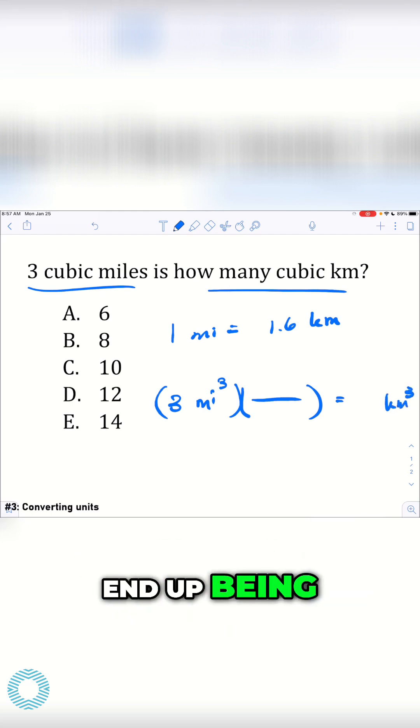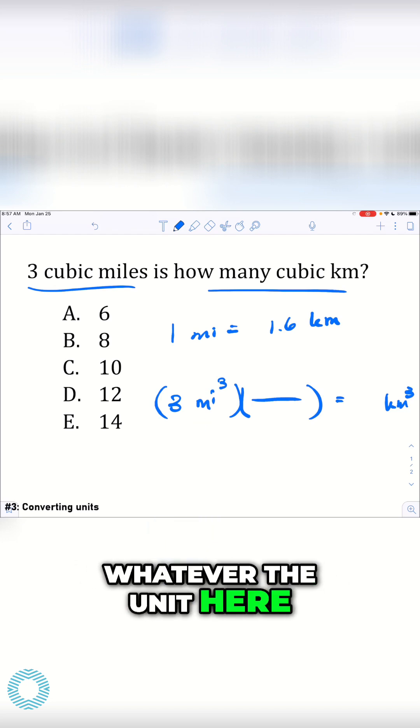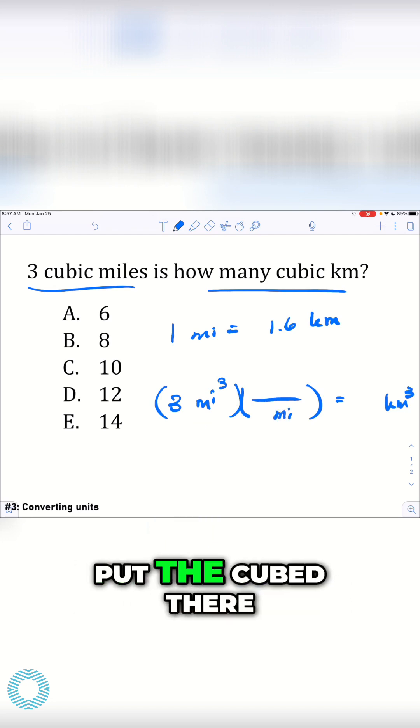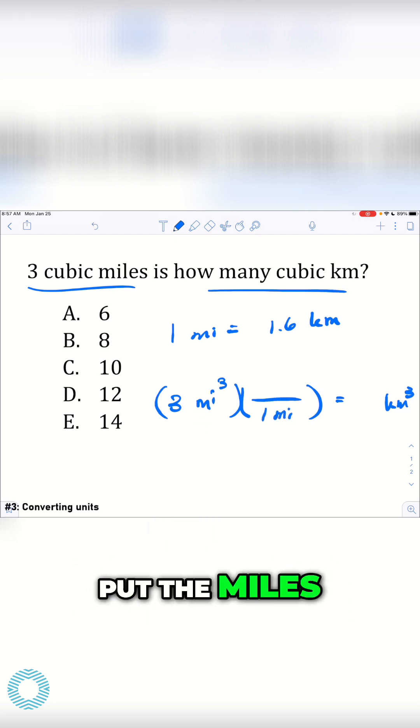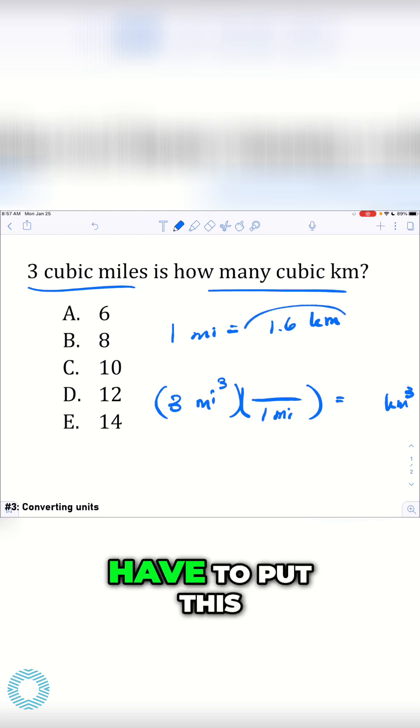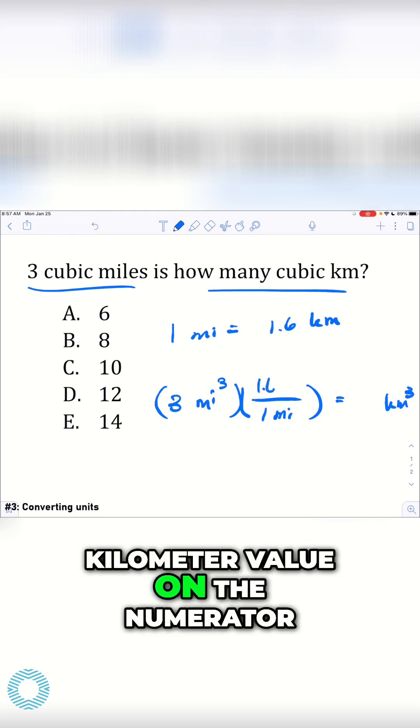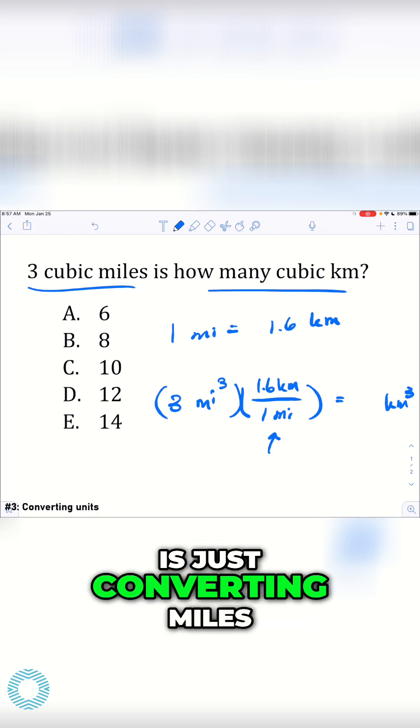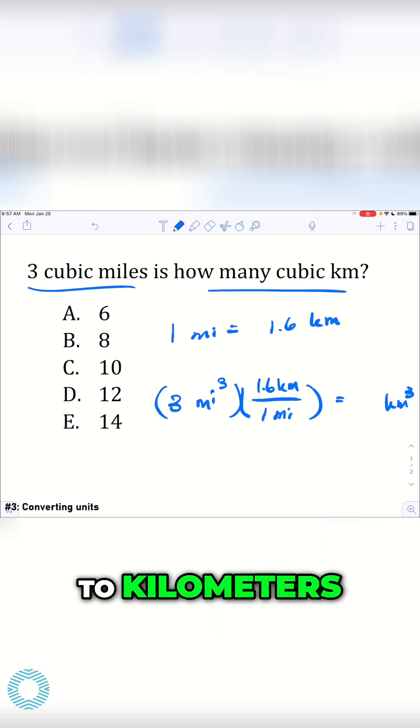Now, what does this fraction end up being? It ends up being whatever the unit here is on the denominator. We're not going to put the cube there. We're just going to put the miles, and we'll put one mile, and then we have to put this kilometer value on the numerator. So this conversion factor is just converting miles to kilometers. That's it.